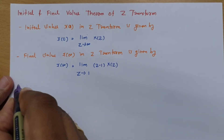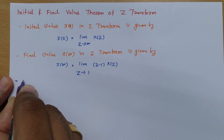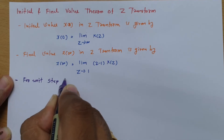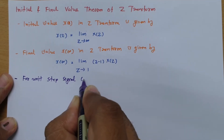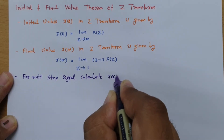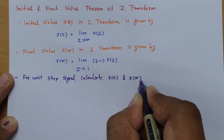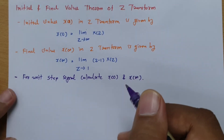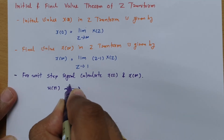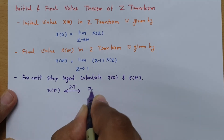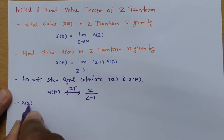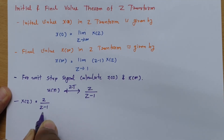Let us have one example so it will be more clear. We have been given the unit step signal. For the unit step signal, calculate the initial value X(0) and final value X(∞). We know the unit step signal is U(n), and its Z-transform is Z divided by (Z−1). So X(Z) = Z / (Z−1).